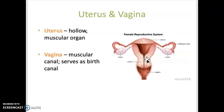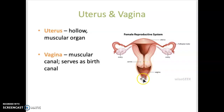The endometrium is the inner lining of the uterus, which is shed each month during menstruation if there is not a fertilized egg present. The cervix is the lowest portion of the uterus and contains an opening into the vagina. The vagina itself is a muscular canal that extends from the cervix to the outside of the body. It serves as the birth canal and also receives semen, which includes sperm, during sexual intercourse.